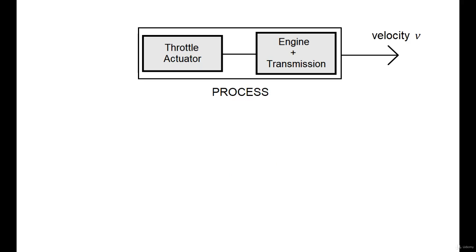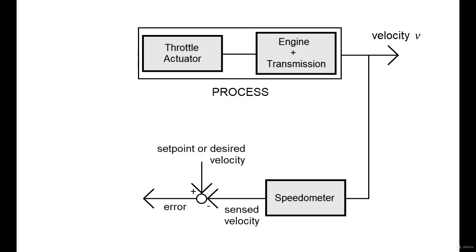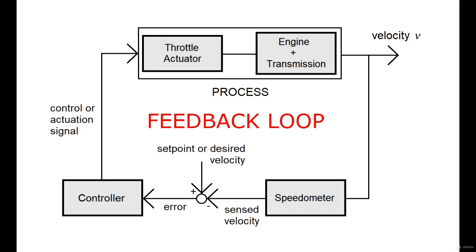First, we start off by sensing the speed using a sensor, or in this case, a speedometer. The sensed speed the speedometer provides is compared with a set point or desired speed to generate an error term. This error term is then fed into a controller which generates an actuation signal to drive the throttle. And thus, we have a feedback loop.